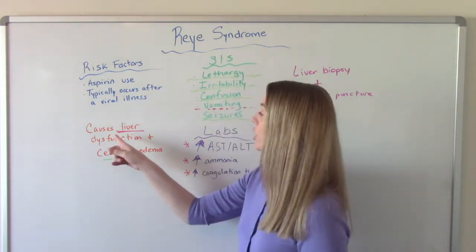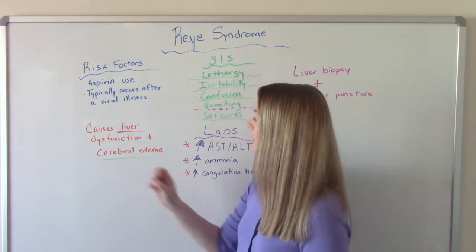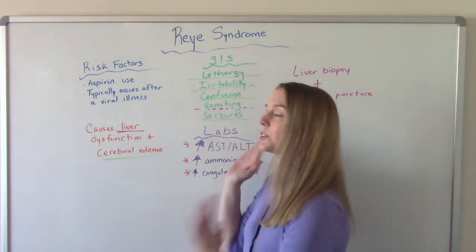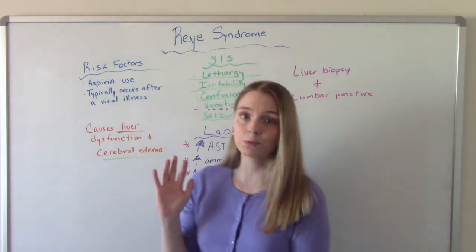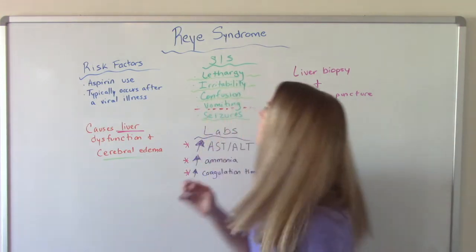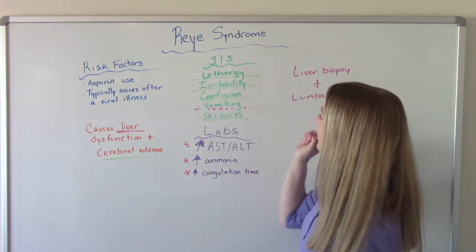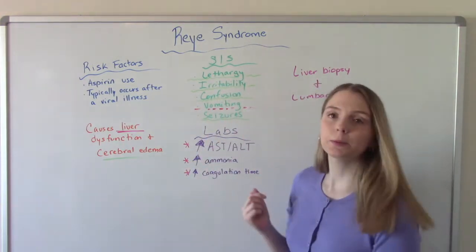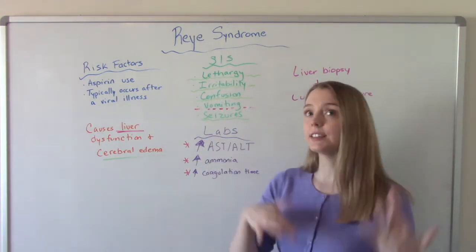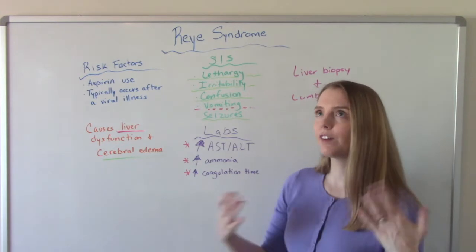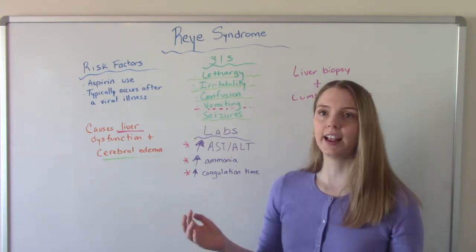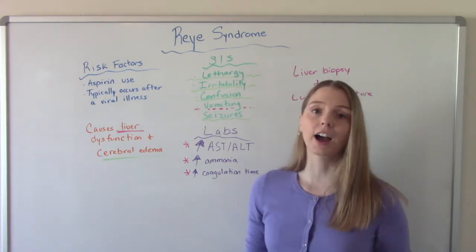Reye Syndrome causes liver dysfunction and cerebral edema. Some signs and symptoms we might see as a result include lethargy, irritability, confusion and delirium, vomiting, seizures, and a loss of consciousness.